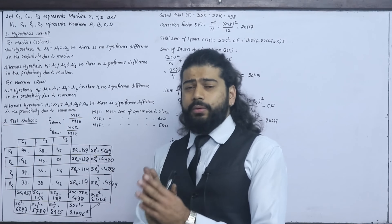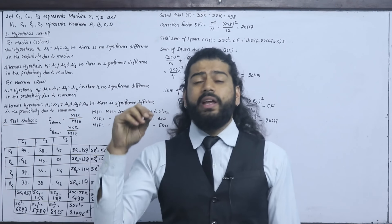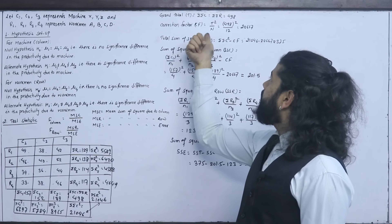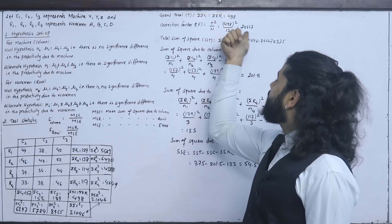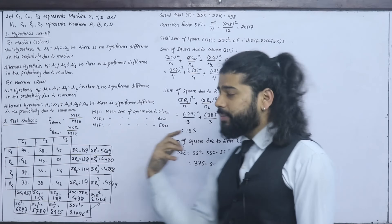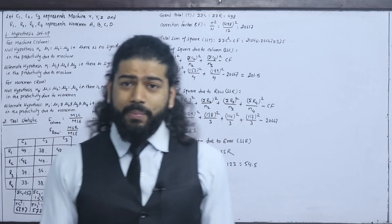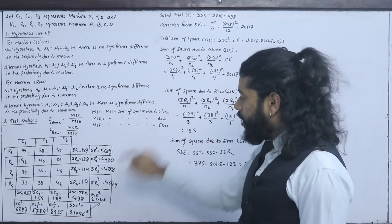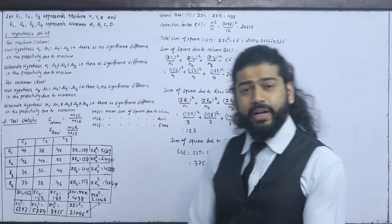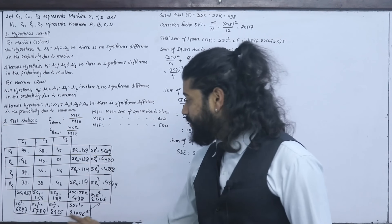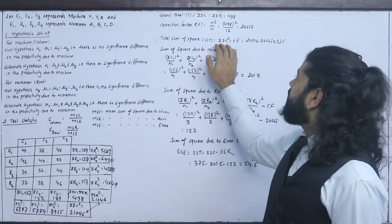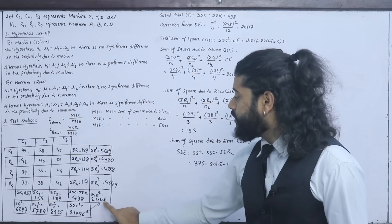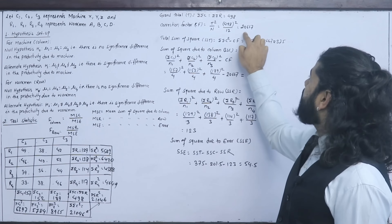We write the correction factor as T² upon N. The grand total squared divided by total N gives the correction factor. Now we compute total sum of squares SST = summation of all values squared minus correction factor = 21046 minus CF = 20,046. The correction factor is 20,667.